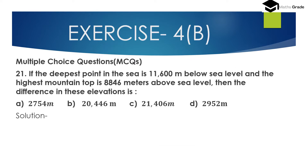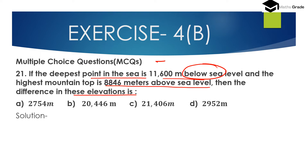Question number 21: If the deepest point in the sea is 11,600 metres below sea level and the highest mountain top is 8,846 metres above sea level, then what is the difference in this elevation? Since the deepest point is below sea level, it will be represented as minus 11,600 metres.